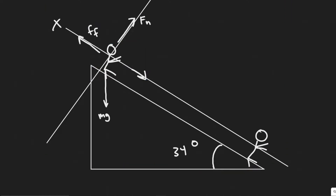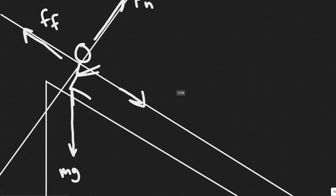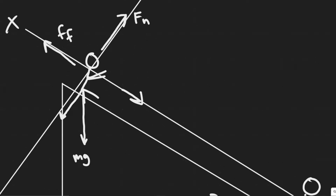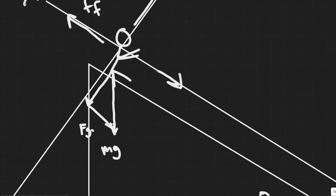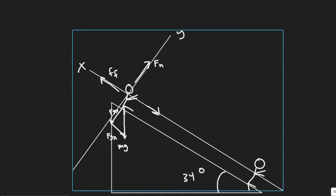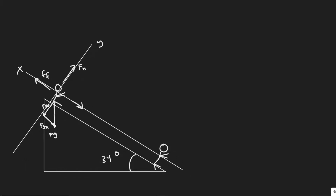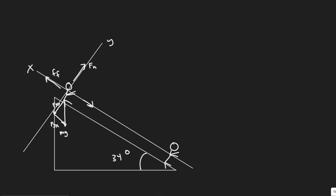The force of friction and the normal force are along those axes, but mg is on neither, so we have to find its components. We'll sum the forces in the x-direction for two scenarios: one with friction and one without friction.